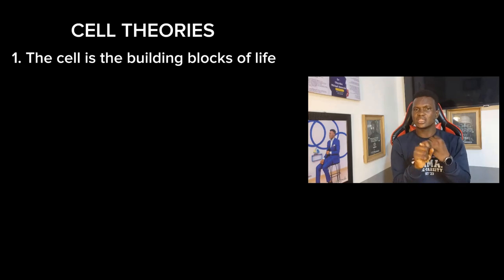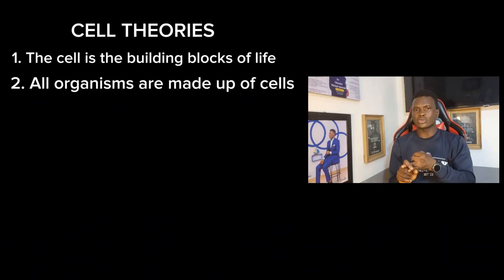Now let's look at the cell theory and the history of the cell. There are three cell theories. Number one: the cell is the building block of life. Number two: all living organisms are made up of cells. Number three: a cell comes from a pre-existing cell — before there is another cell, there must have been a cell that existed.